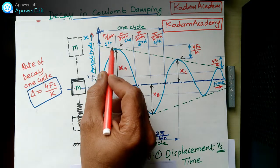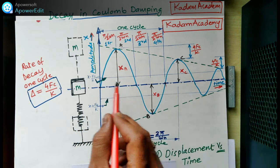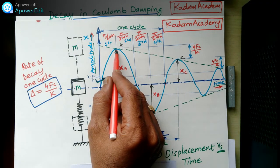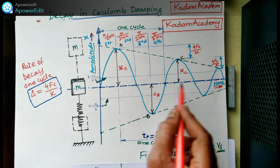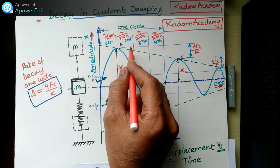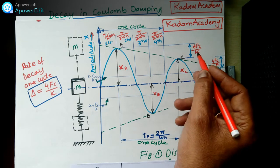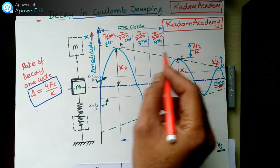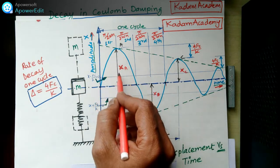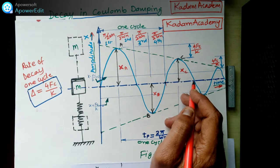As shown in this diagram, one cycle completes from one extreme position to the other. The amplitude versus time diagram shows the decrease in amplitude over each cycle. The quantity 4Fc/k represents the decay — the reduction in amplitude after one complete cycle. The amplitude Xa reduces on one side of the mean position.